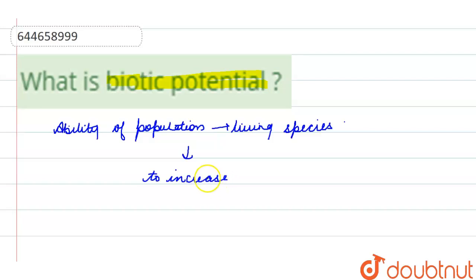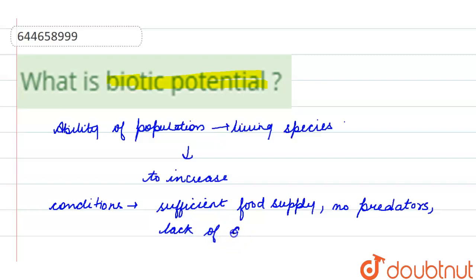Now it's their ability to increase under ideal environmental conditions. And what are those conditions? The conditions would be sufficient food supply, no predators, and lack of disease.